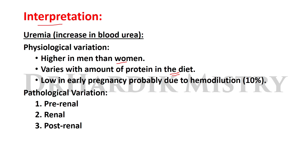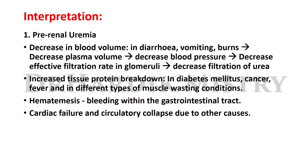Pathological variation includes pre-renal, renal, and post-renal causes. Pre-renal uremia: decrease in blood volume — for example, in conditions of diarrhea, vomiting, and burns — leads to decreased plasma volume, decreased blood pressure, and decreased effective filtration rate in the glomeruli, hence decreased filtration of urea, so urea concentration increases in the blood.